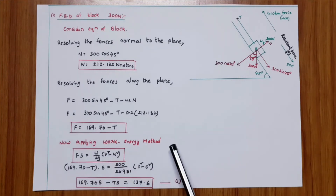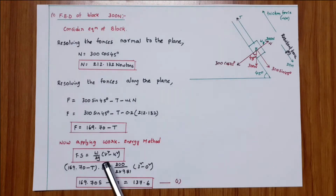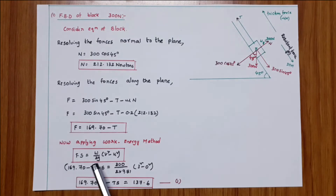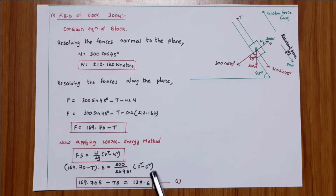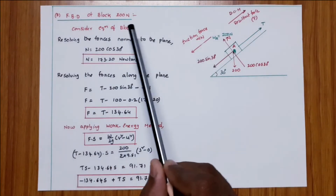Applying the work-energy method: F × s equals (W / 2g) × (v² minus u²). Here F equals 169.70 minus T, W equals 300 N, g equals 9.81, v equals 3, u equals 0. Multiplying through by s: (169.70 minus T) × s equals 137.6. This is Equation 1.